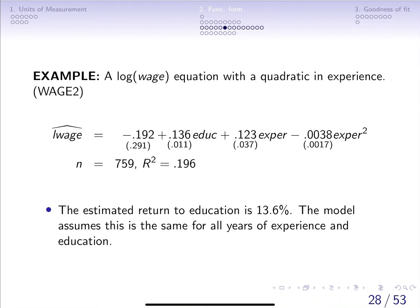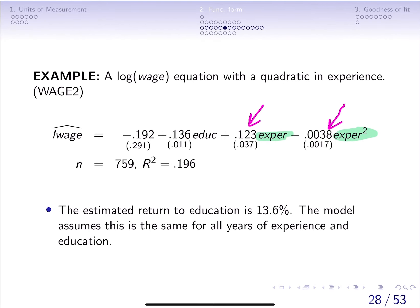Here is an example where we measure the effect that experience has on log wages by introducing a quadratic term. The coefficient on experience is positive and the coefficient on experience squared is negative, so the effect is increasing at a decreasing rate. Notice that we also have education here, so the estimated return to education is 13.6%, holding everything else constant.